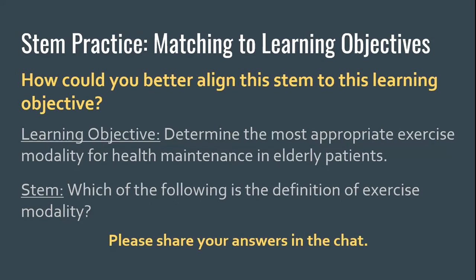Thank you — good examples, Kelly and Alyssa. Craig, I appreciate your point that the original stem doesn't approach the concept of appropriateness. I also like the idea that you could have several items for the same learning objective — pieces to it. First, ensure they understand the definition of exercise modality. Then a question on appropriate exercise. Then a question like Kelly or Alyssa phrased: 'Which of the following is the most appropriate exercise modality?' That way you can see at what point in a student's knowledge they're missing information to reach the learning objective.